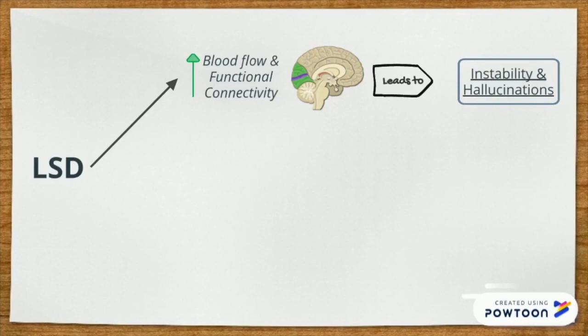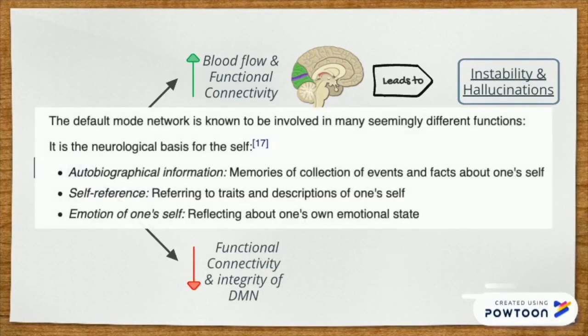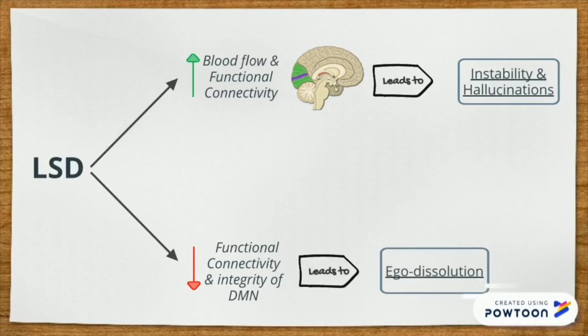While LSD increases the functional connectivity in the visual cortex, it concurrently reduces the functional connectivity in other areas of the brain, namely the default mode network or DMN. DMN is a network of large brain regions that are collectively responsible for the sense of self. The disintegration of well-established brain networks such as DMN is believed to be the cause of ego dissolution and the subsequent altered experience of self-identity and meaning of life.